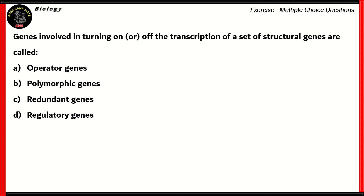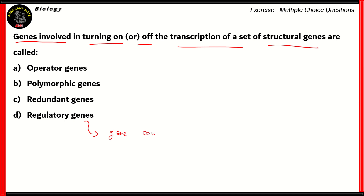Now let's look at another question. We need to find out the genes involved in turning on or off the transcription of a set of structural genes. The options are: operator genes, polymorphic genes, redundant genes, and regulatory genes. Option D, regulatory gene, refers to a gene that controls the expression of other genes. So option D is incorrect for this question.